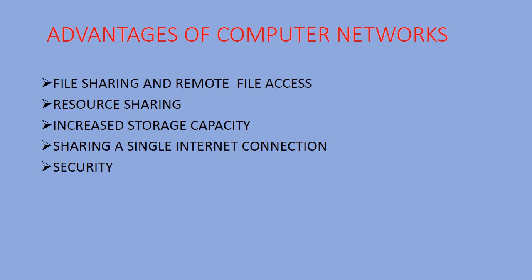Next is increased storage capacity. A computer network is a group of computers, and each computer has its own storage capacity. With a large number of computers, we get a huge storage capacity. Next is sharing a single internet connection — we do not need many connections. With one connection in a computer network, all computers can be connected, making it cost efficient.